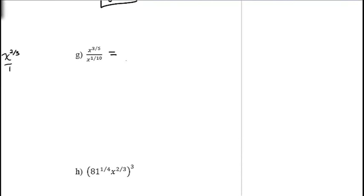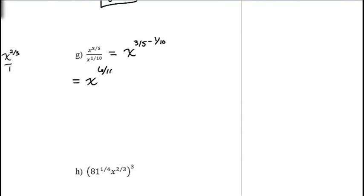For x to the 3/5 divided by x to the 1/10: subtract exponents — 3/5 minus 1/10. We need a common denominator of 10, so 3/5 becomes 6/10. Then 6/10 minus 1/10 equals 5/10, which reduces to 1/2. The result is x to the 1/2.